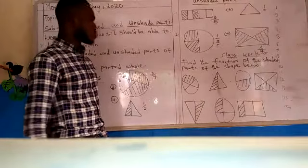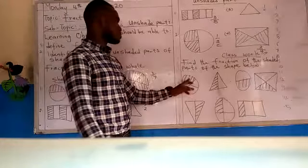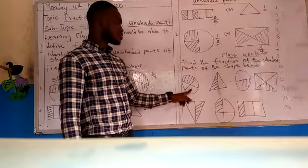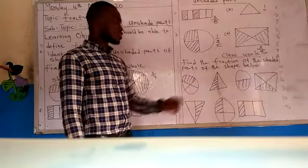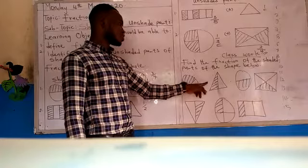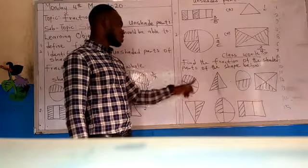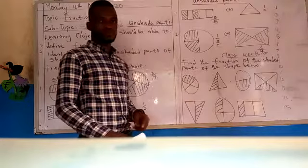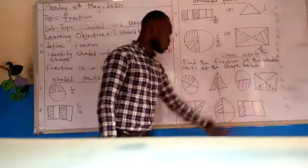Now we are going to consider the parts that are shaded. Here we have one, two, three, four - four parts. How many parts are shaded here? Write the number of parts that are shaded over the total parts that we have in this shape. The same thing applicable to all the shapes we have on the board.